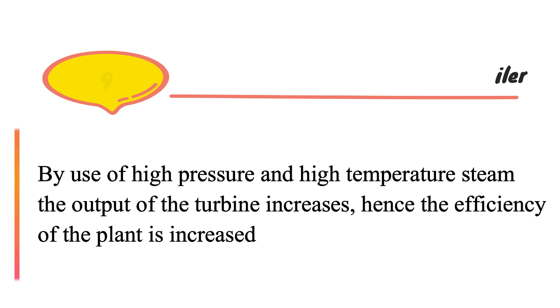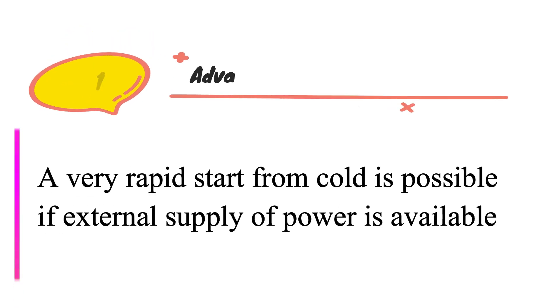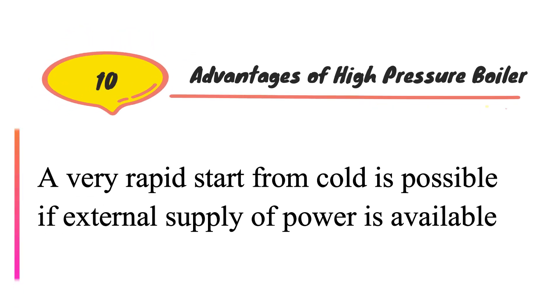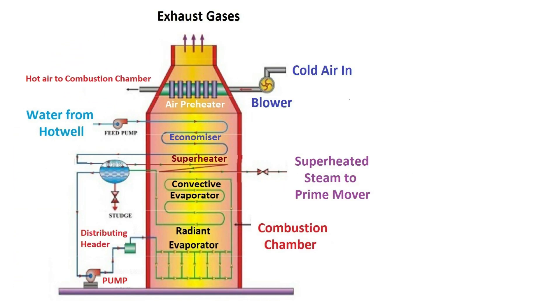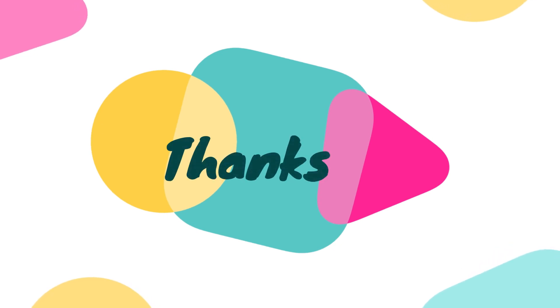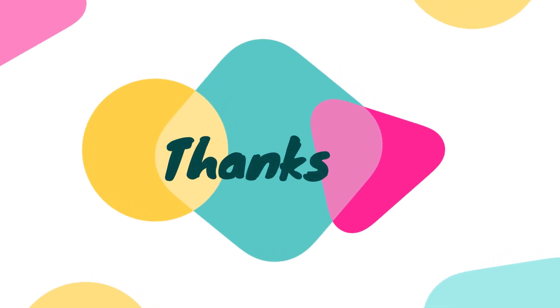By use of high pressure and high temperature steam, the output of the turbine increases and hence the efficiency of the plant is increased up to 40 to 42 percent. A very rapid start from cold is possible if an external supply of power is available. In the next video lecture we will discuss the Lamont boiler. If you found this content helpful, please subscribe to our channel and share it with your friends. Thank you.